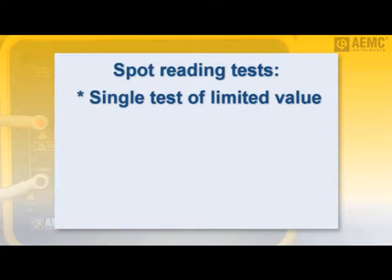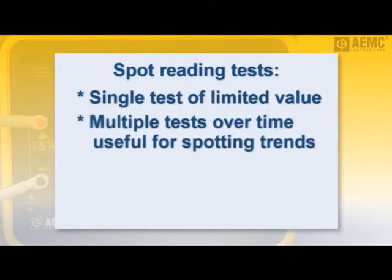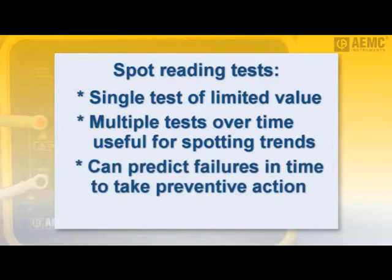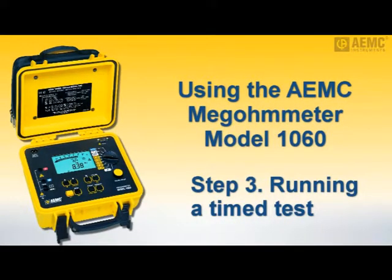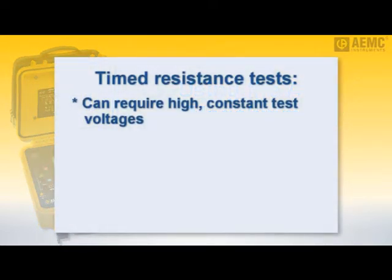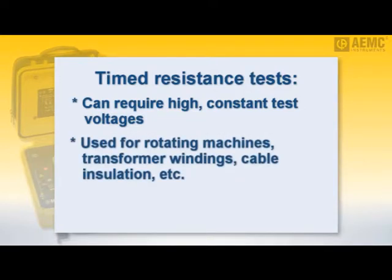Note that a single spot reading test is of limited value, but the results become meaningful when a series of tests — all featuring the same test voltage and duration — are performed over time and the results compared. This comparison can help predict a potential insulation failure in time to take preventive action. You can also print the measurement by connecting the instrument to a serial printer, as explained in the instrument's user documentation. Now we'll demonstrate a more complex insulation resistance measurement method known as the time-to-resistance test, which involves configuring the test to run for a defined period of time. This test is particularly useful for large rotating electrical machinery, especially systems with high operating voltage, as well as for measuring resistance in transformer windings and cable insulation.